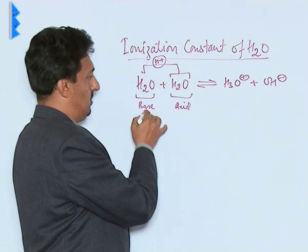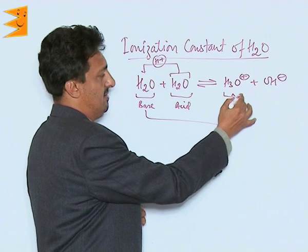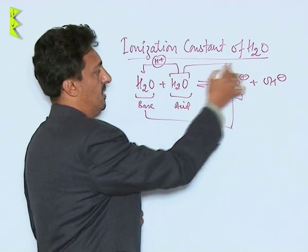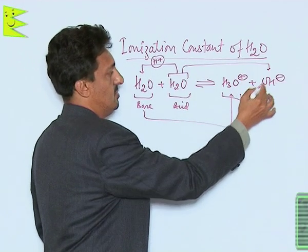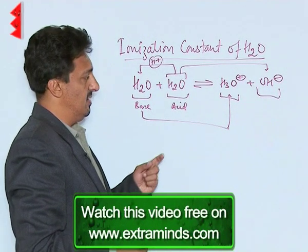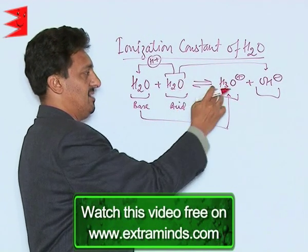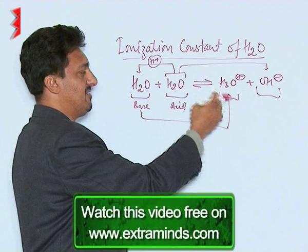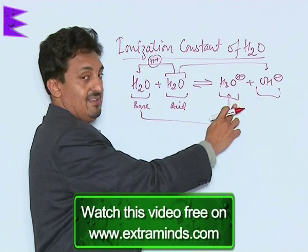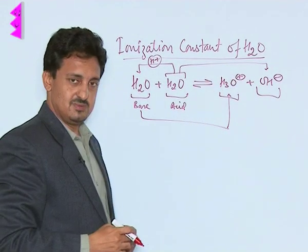The water molecule that accepted H⁺ gets converted into the hydronium ion (H₃O⁺), and the one that donated H⁺ gets converted into OH⁻ ions. When they come back and combine with each other, H₃O⁺ acts as the conjugate acid and OH⁻ acts as the conjugate base.